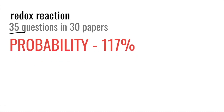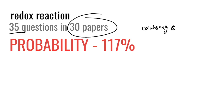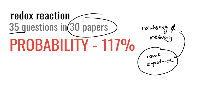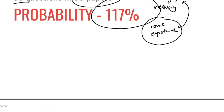Redox reactions has 35 questions in 30 papers — almost one question per paper — with a probability of 117%. They ask about oxidizing and reducing agents: what is the oxidizing agent in this equation, what is the reducing agent? They could also ask about ionic equations, where they give you an ionic equation and ask you to identify the oxidizing and reducing agents.